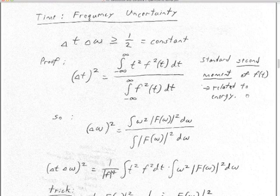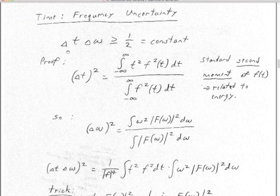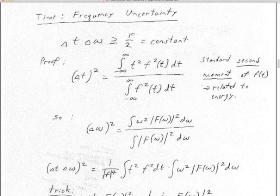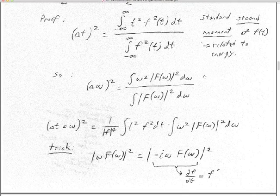I think I'll have time to get through this time-frequency uncertainty. The Heisenberg uncertainty principle basically says that the time span times the frequency bandwidth — the time precision versus frequency precision — you multiply those two together and you're going to get a value no smaller than one half. That's the constant, for any wave.